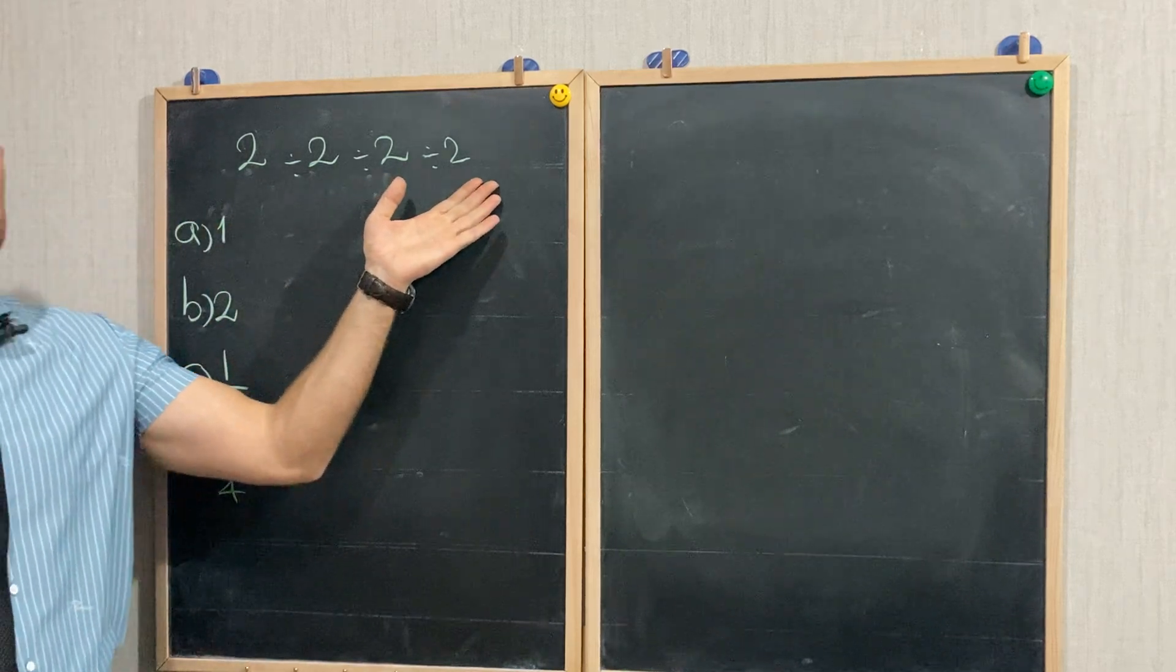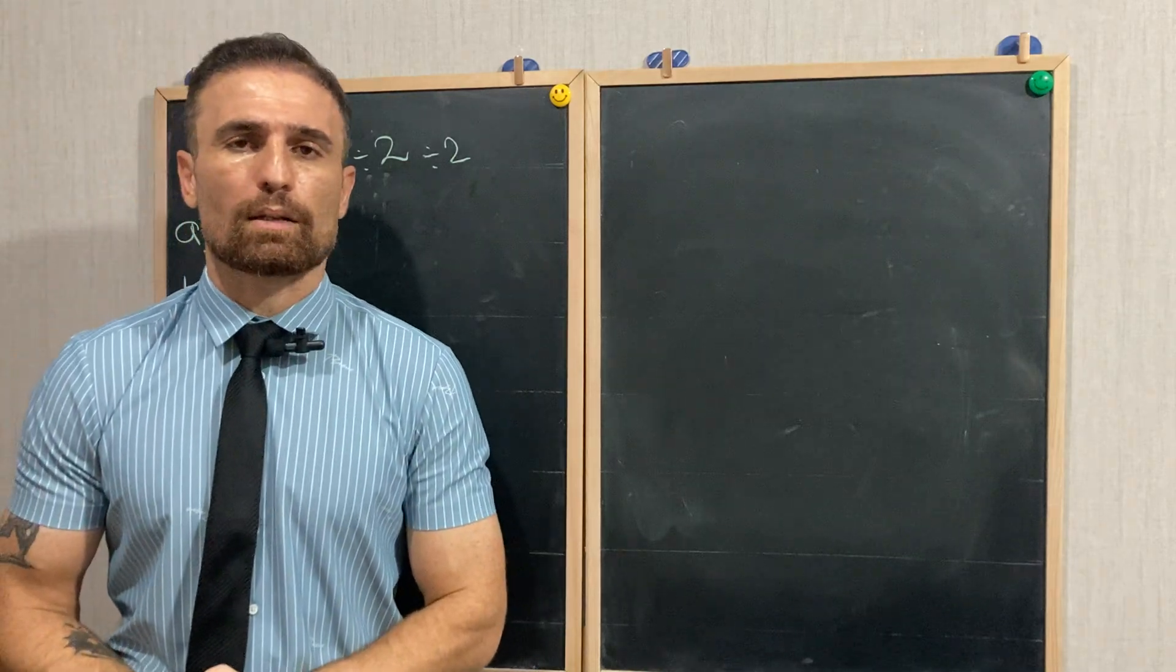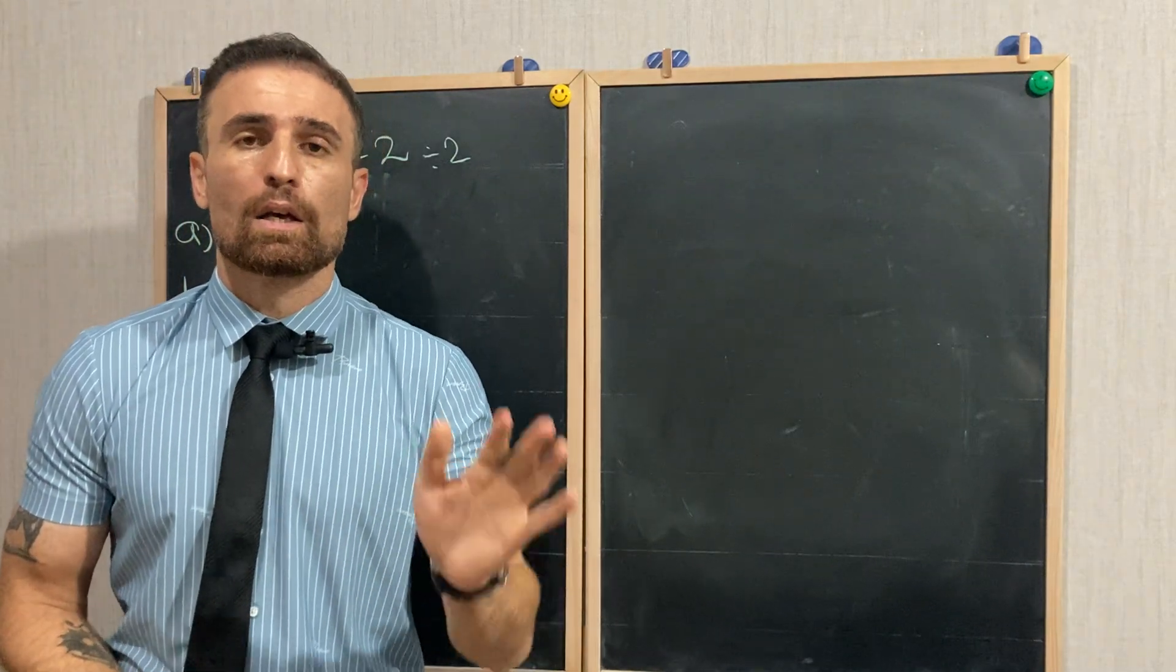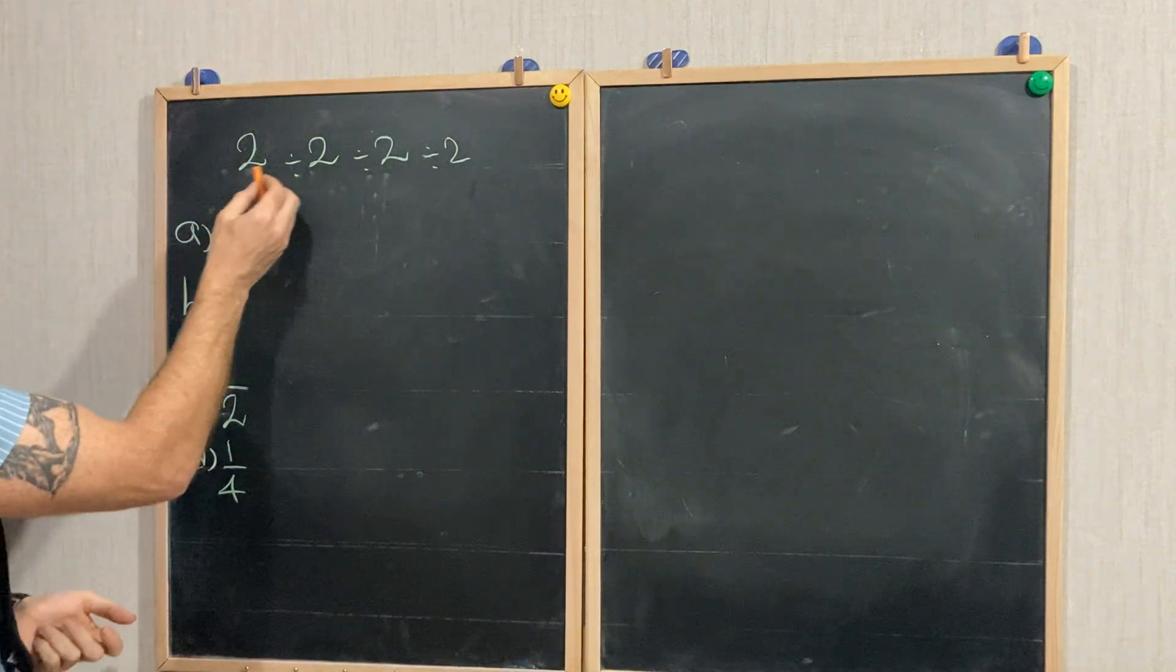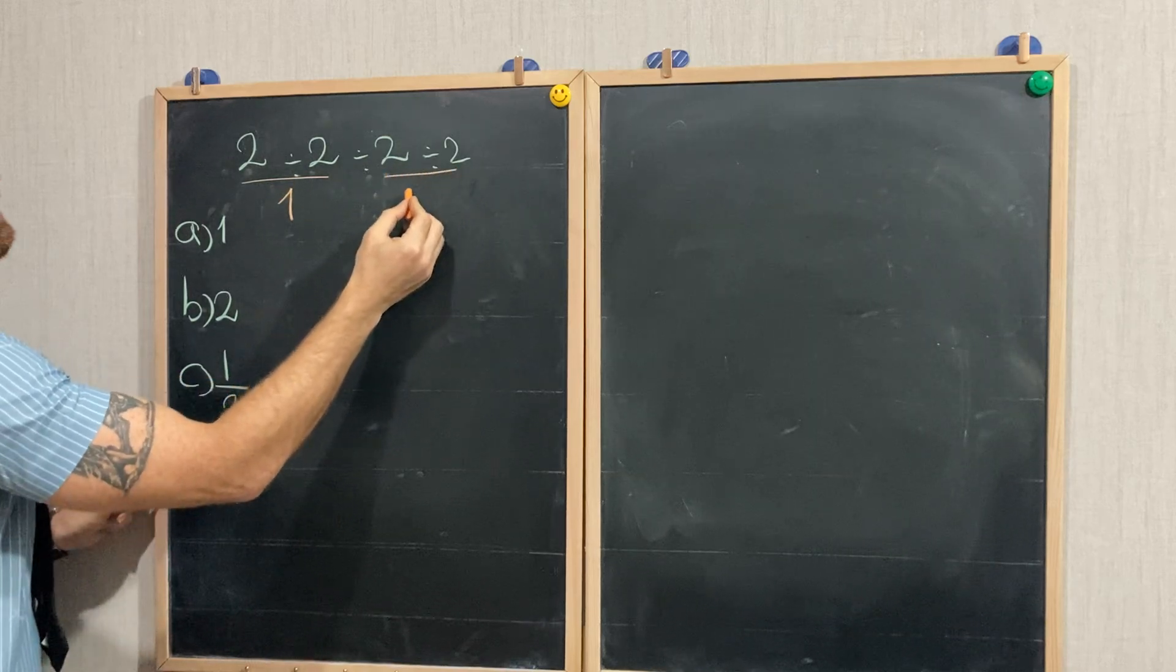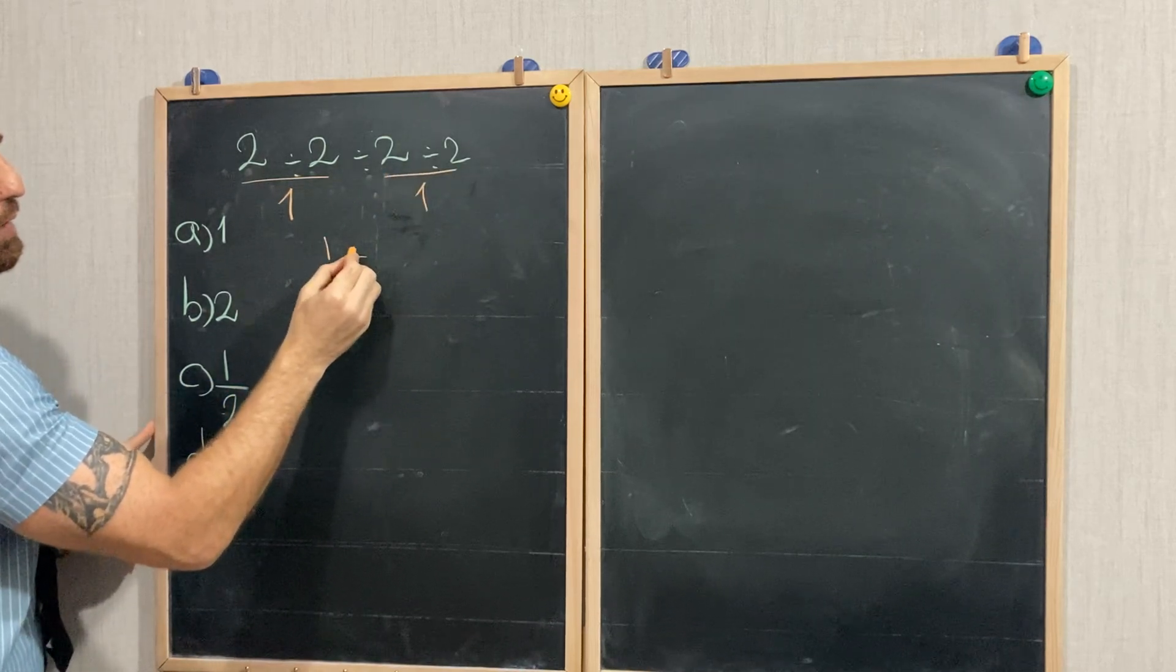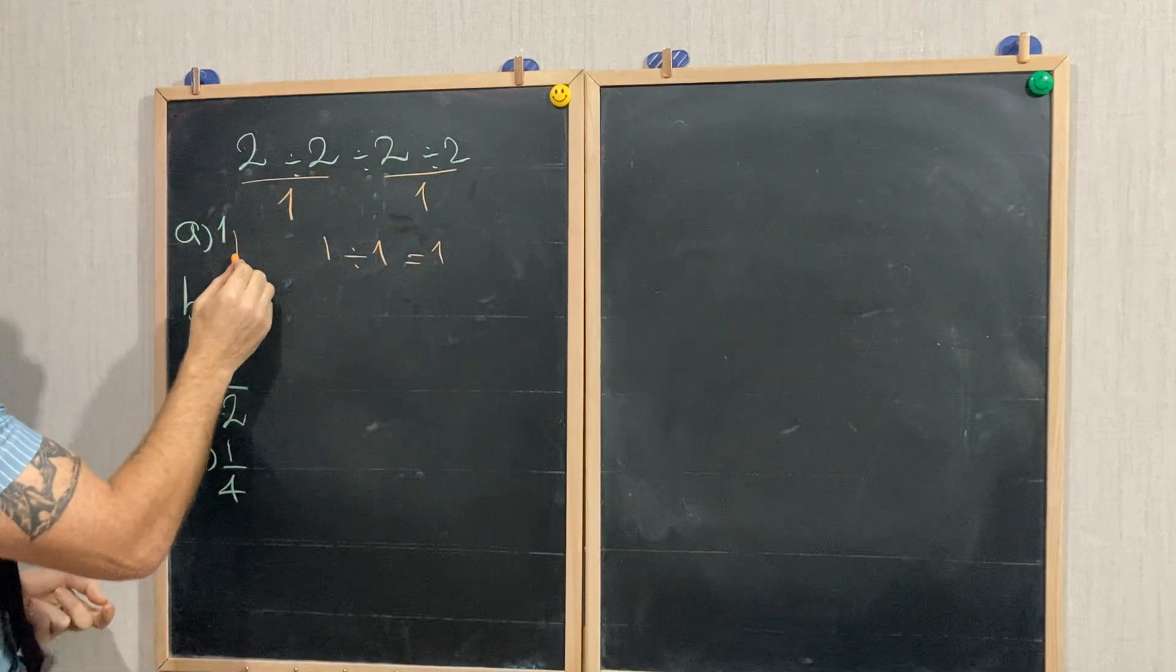The question looks very simple, but why do more than 95 percent of students not find the correct answer? So let's start with the solution. Usually they will start with these two: 2 divided by 2 equals 1, then 2 divided by 2 equals 1, and 1 divided by 1 equals 1. And what is the correct answer? Option A, 1.